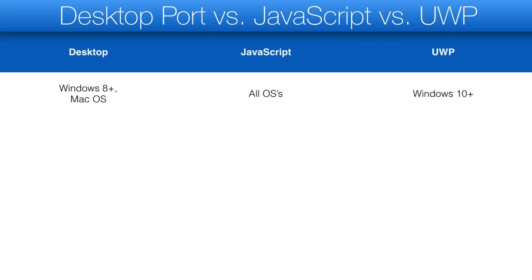Desktop is effectively one port with two targets: Mac and Windows 8 or newer. JavaScript should work pretty much everywhere, although a reasonably modern browser is required. Performance might not be great when running on some of the older mobile devices though.